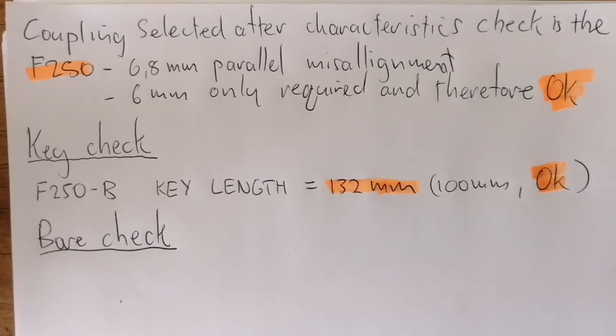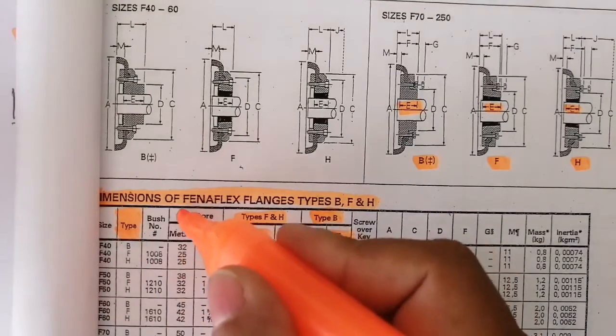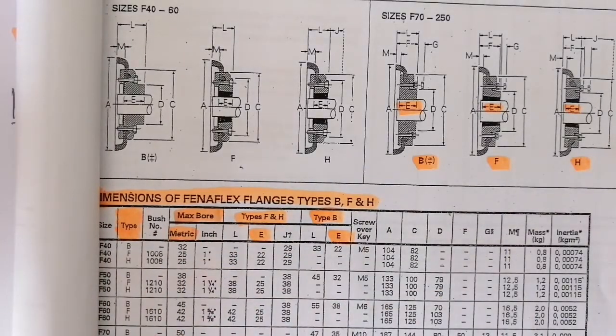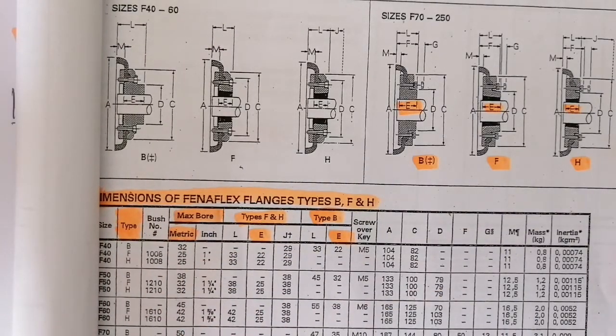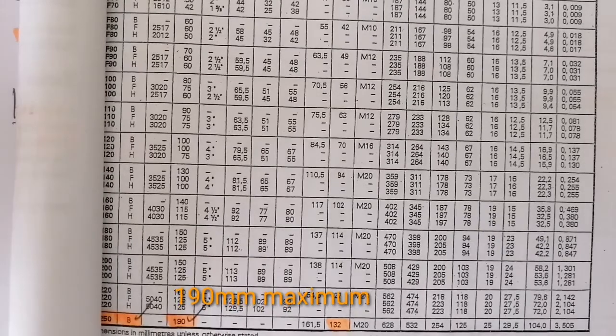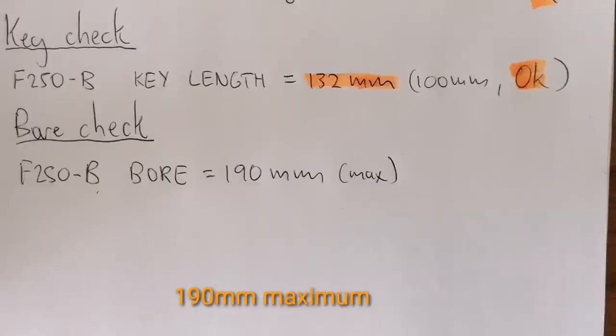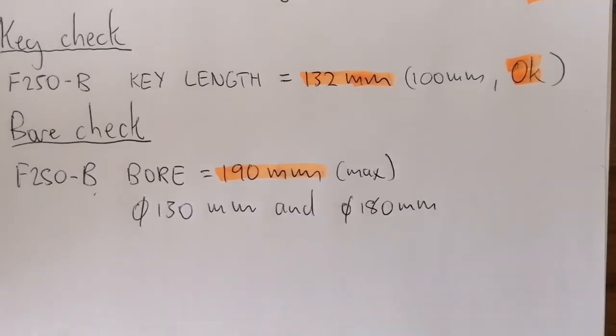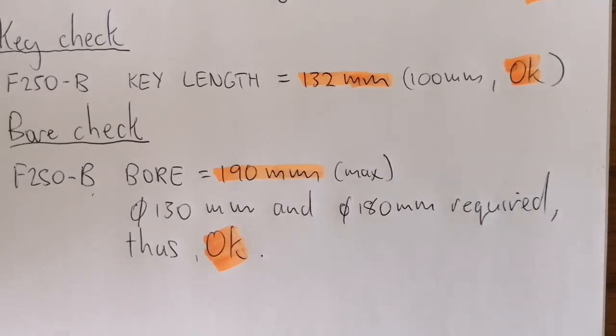Bore check - the bore check is featured on top of the table. We'll be working with metric bore sizes. Going downwards to the F250, we have a maximum bore of 190 millimeters. We can see that the F250 type B bore equals 190 millimeters max. Our shaft sizes are 130 millimeters and 180 millimeters required. Thus it is okay because 190 is greater than 130 and 180 respectively.